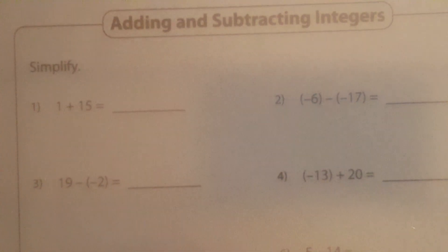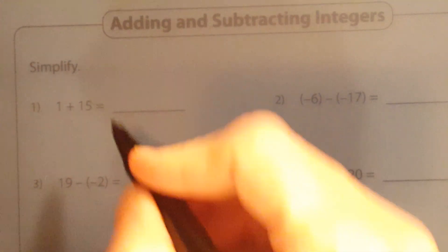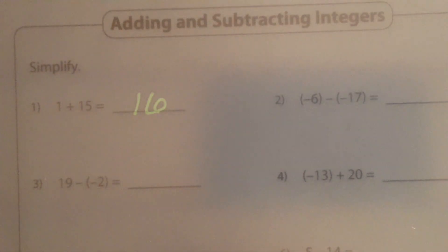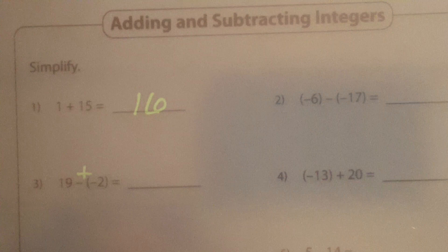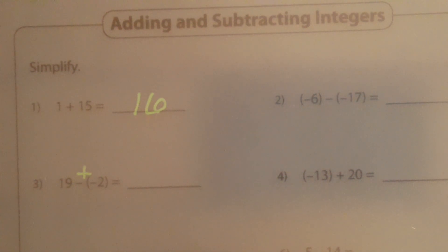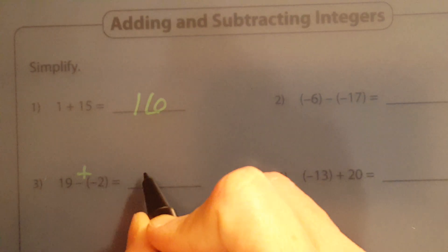So let's see. 1 plus 15 is 16. 19 minus negative 2 turns into 19 plus 2 is 21.